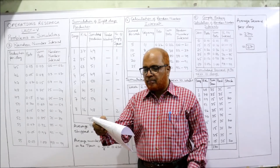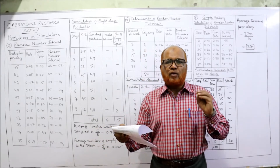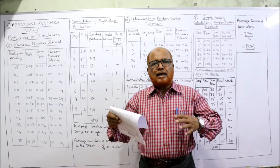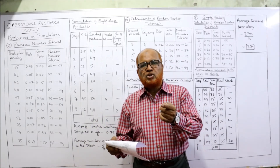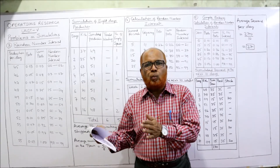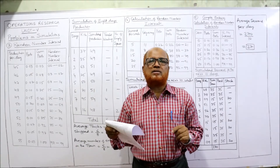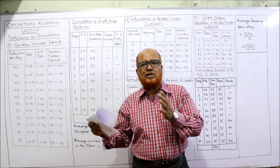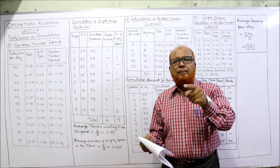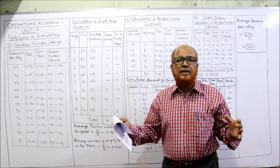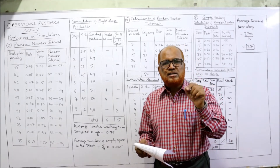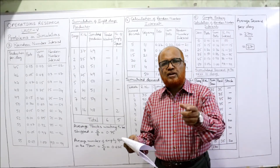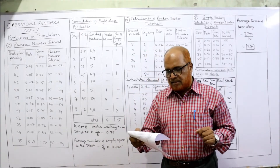Eight random numbers are given, so we simulate production for eight days. The train capacity is 51 trucks. If production is more than 51, trucks have to wait for shipping because there is no space. If production is below 51, there will be empty spaces in the train. We need to find the average number of empty spaces and the average number of trucks waiting to be shipped over the eight-day period.